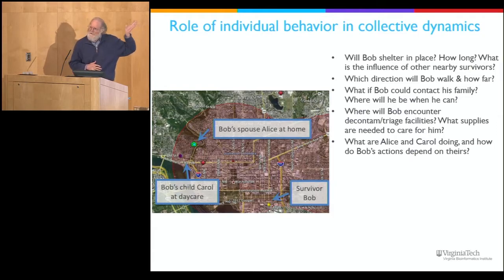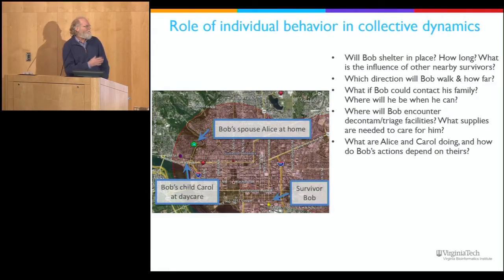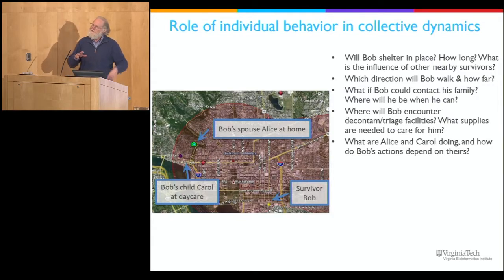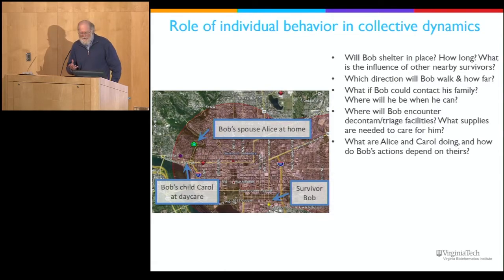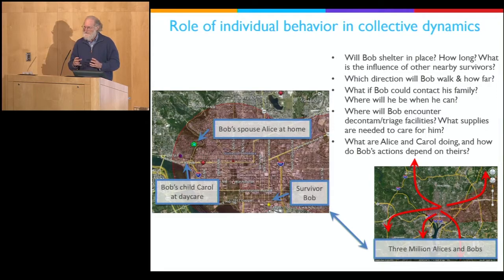We look at the individuals involved in the event. Here's a household: Alice and Bob and their child Carol. Simple things like where they all are when this happens influence the decisions that each of those people make. The decisions they make—shelter in place, evacuate, seek family members—are what drive how those people come into contact with your efforts at mitigation, what resources they'll need, and eventually what the casualties will be. When you put all the households together, you get these collective phenomena that you have to understand if you want to effectively mitigate damage in an event like this.